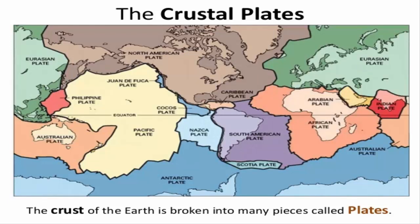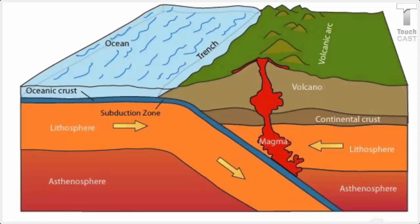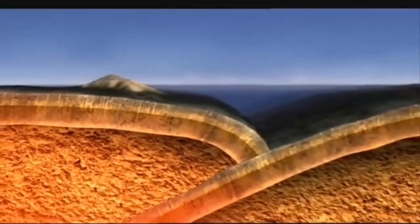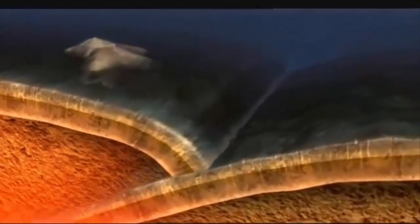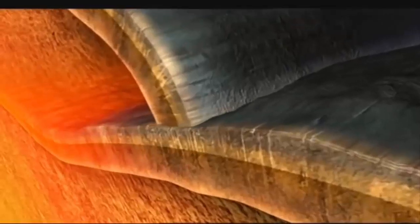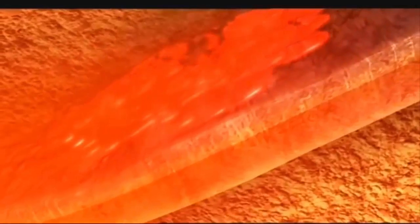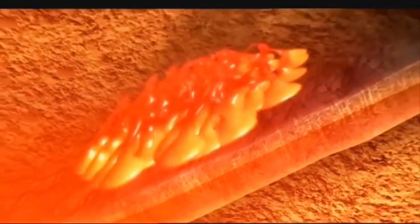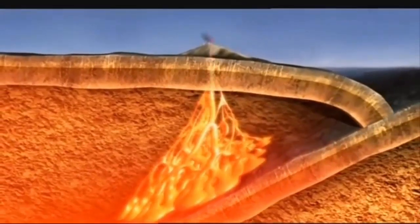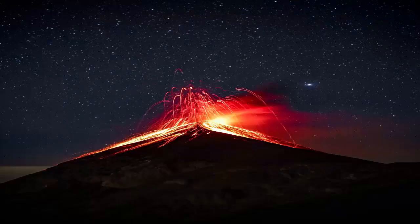The plates under the great land masses are usually thicker than the plates under the oceans. When two plates collide, the sea plate, being lighter, is usually forced downwards towards the hot interior of the earth. This sea plate melts in the intense heat. The rocks of the land plate, along with this molten material, force their way to the surface of the earth as lava and ash. This forms the cone-shaped mountains we recognize as volcanoes.